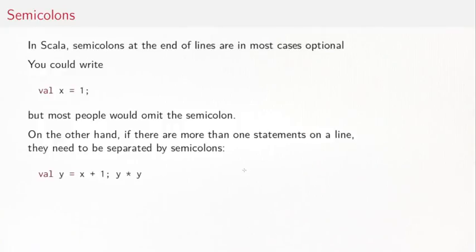One thing we haven't mentioned so far were semicolons, simply because so far we haven't seen them. Even though in Java every statement would be terminated by a semicolon, in Scala they are in most cases optional. You could have written val x equals one with a semicolon, but most people would omit that.